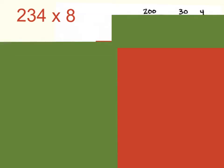Let's start off by multiplying 234 times 8. So we know if we break this number up into expanded form, we would have 200 plus 30 plus 4. And we're going to take all of these numbers and multiply them by 8. Remember, to find the area of a rectangle, you need to multiply length times width. So basically, you'll be taking 8 times 200, 8 times 30, and 8 times 4, and then adding all of those together.